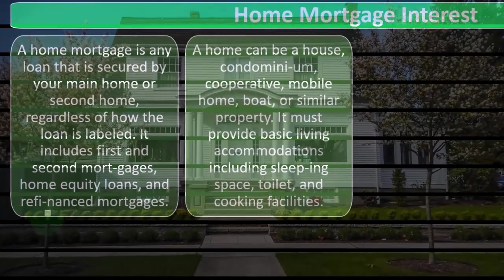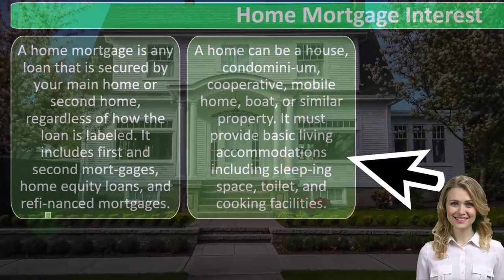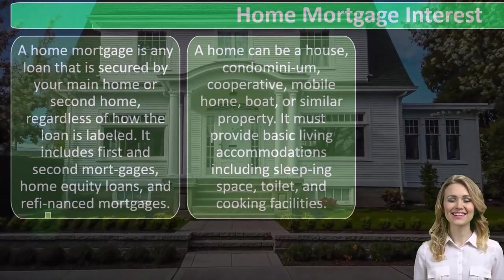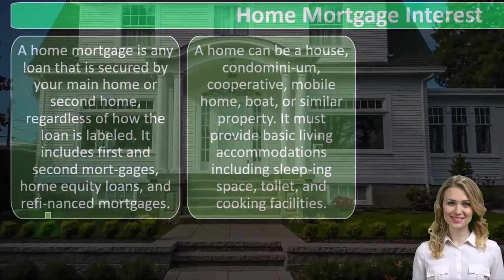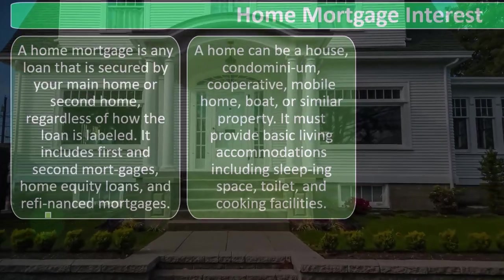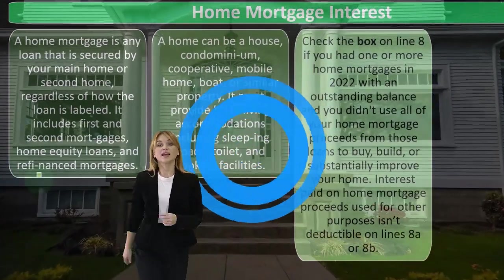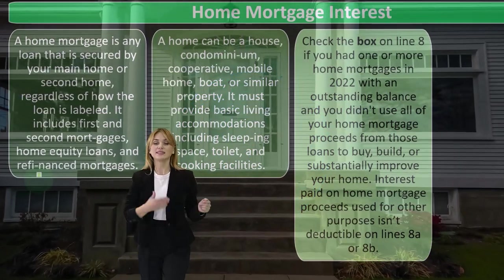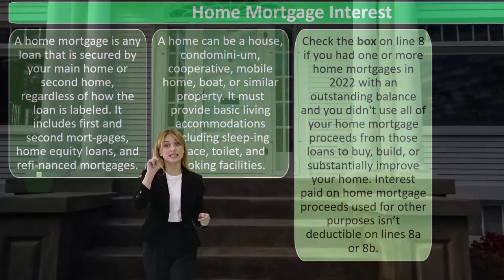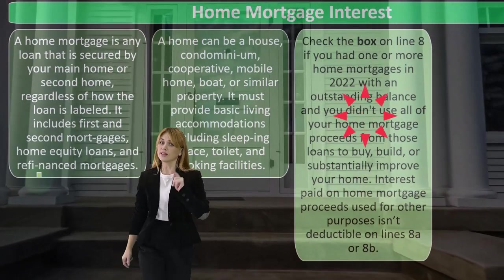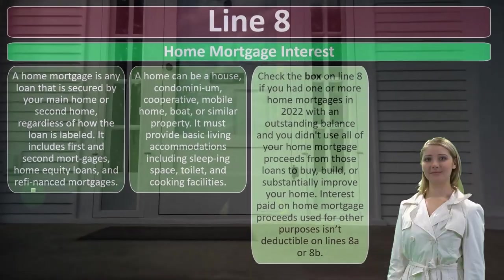A home can be a house, condominium, cooperative, mobile home, boat, or similar property. It must provide basic living accommodations, including sleeping space, a toilet, and cooking facilities. The qualification for what counts as a home is fairly broad, but you do have to have the general amenities necessary for a home.